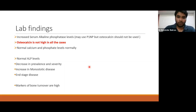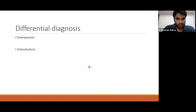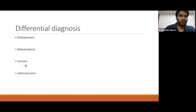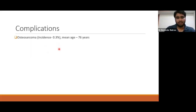Differential diagnoses to consider include osteoporosis, osteomalacia, and cancers — vertebral lesions can appear as ivory vertebra or lytic changes. Osteosarcoma is actually a complication of this disease and must be closely followed. The incidence of osteosarcoma is only 0.3% in this population with a mean age of 76 years. They generally present with associated increased pain, some fracture, or soft tissue mass.